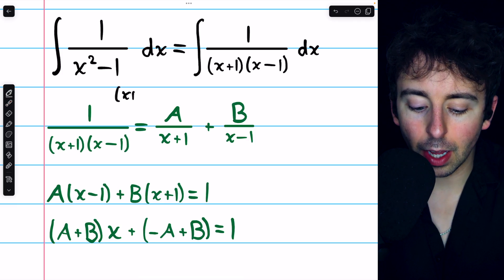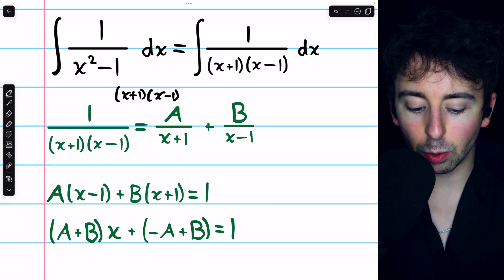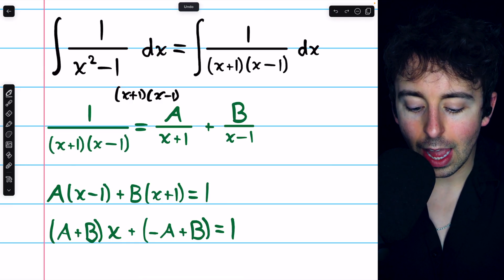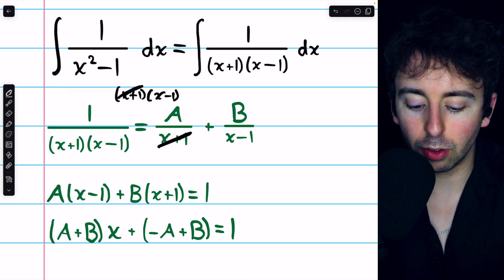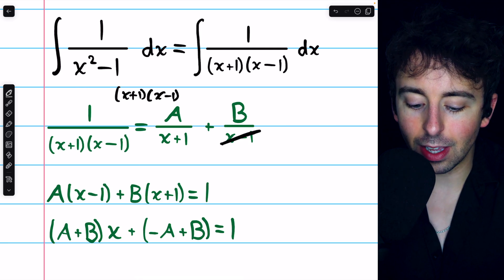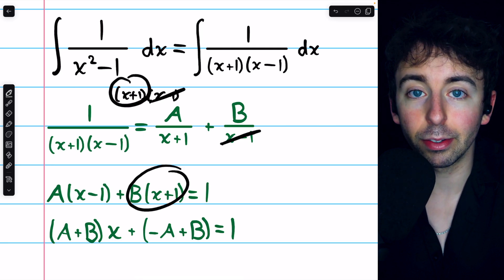We'll multiply both sides of this equation by x plus 1 times x minus 1. That will cancel out the denominator over here, giving us just 1. It will cancel out the x plus 1 with A, leaving behind A times x minus 1. And it will cancel out the x minus 1 with the B, leaving behind B times x plus 1.